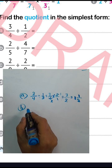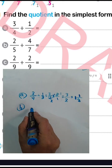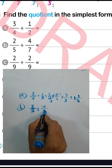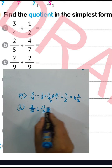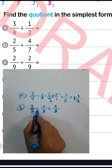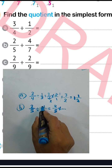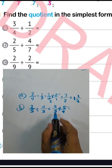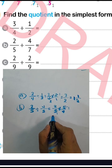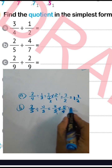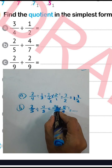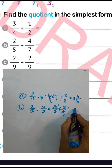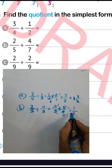Question letter b: 2 over 5 divided by 4 over 7. Write the first fraction 2 over 5, then convert from division to multiplication by raising the inverse of 4 over 7, which will be 7 over 4. Simplify: 5 divided by 5 equals 1, 4 divided by 2 equals 2, 2 divided by 2 equals 1. Then 1 times 1 equals 1, and 1 times 2 equals 2, so the result will be 1 over 2.